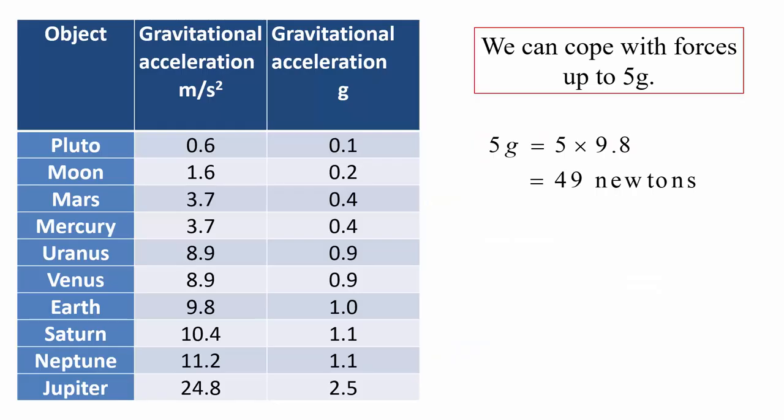Now, in this table, we've got a list of planets, including our Moon, with a gravitational acceleration given in terms of meters per second squared, and also in terms of G, the G force, where G is 9.81. So, if you look at Earth down towards the bottom there, the gravitational acceleration is 9.8 approximately, meters per second squared, or 1 G.